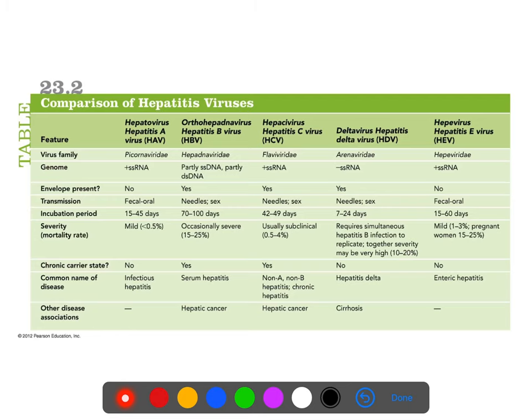The various hepatitis viruses are not necessarily even related — they're all in different families. Some are RNA, some are DNA, some are positive sense, some are negative sense. They aren't necessarily related in any way genetically; they're only related in terms of their symptoms and functionality.